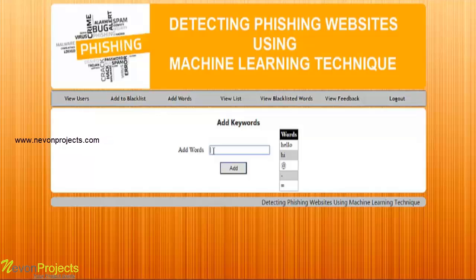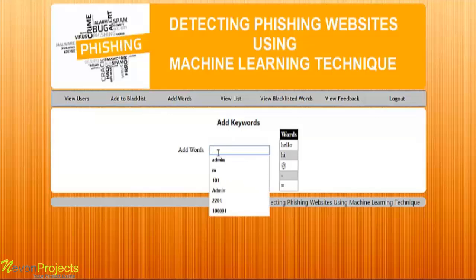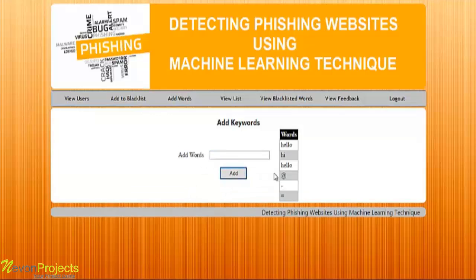If the system finds those keywords present in the meta tag as well as the title, that site will be shown to the user as blacklisted. The admin must enter a keyword — for example, any string — and once he clicks the add button, these details will be added into the system. The system will then check whether this keyword is present in the meta tag or title of the particular URL.